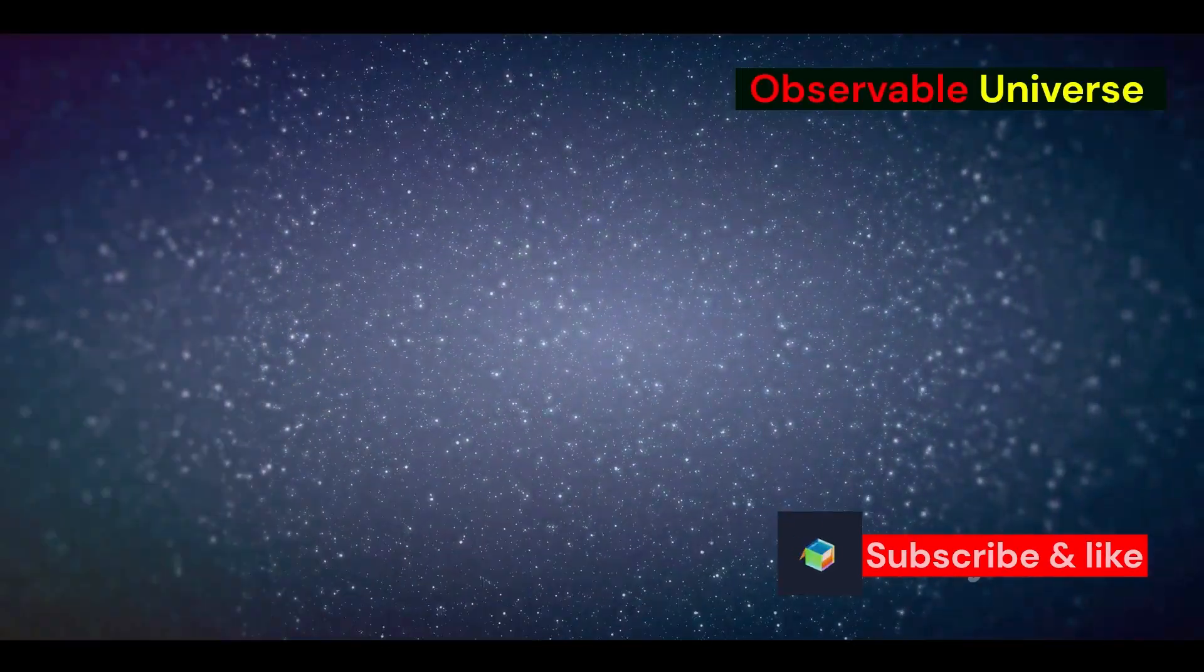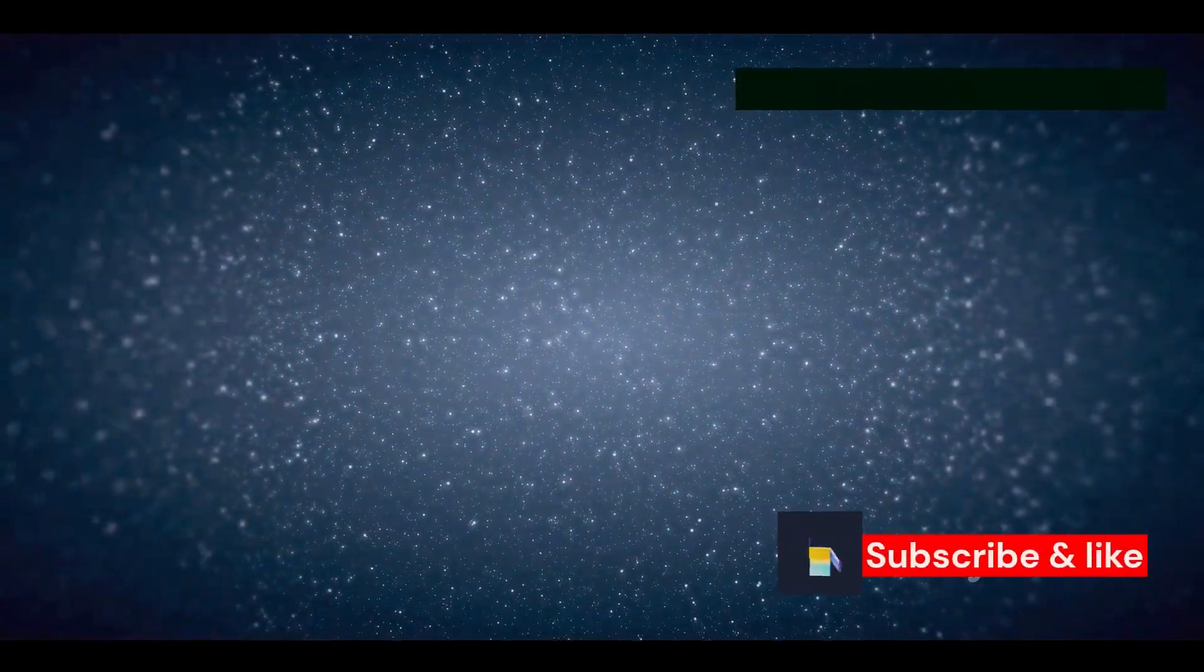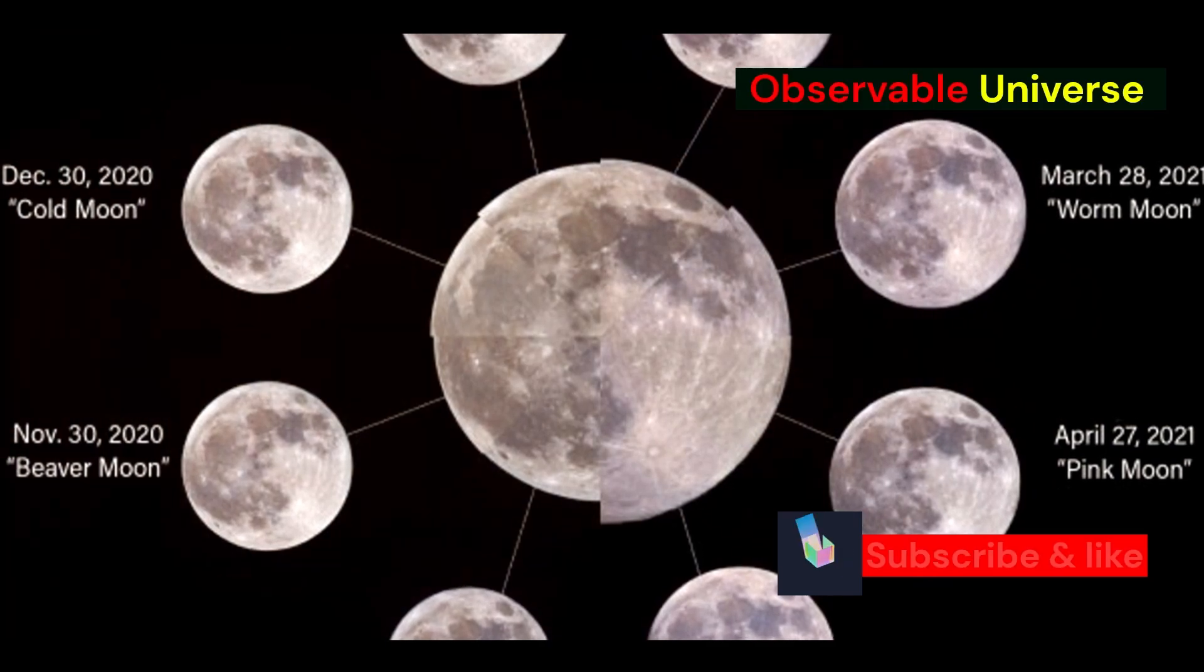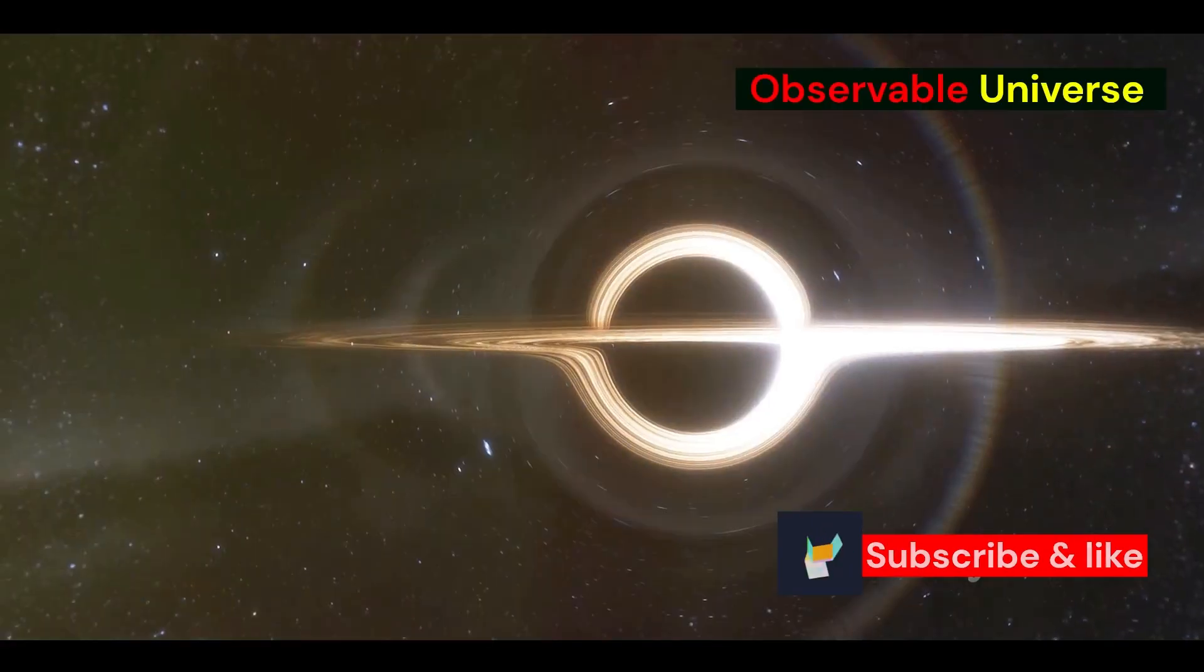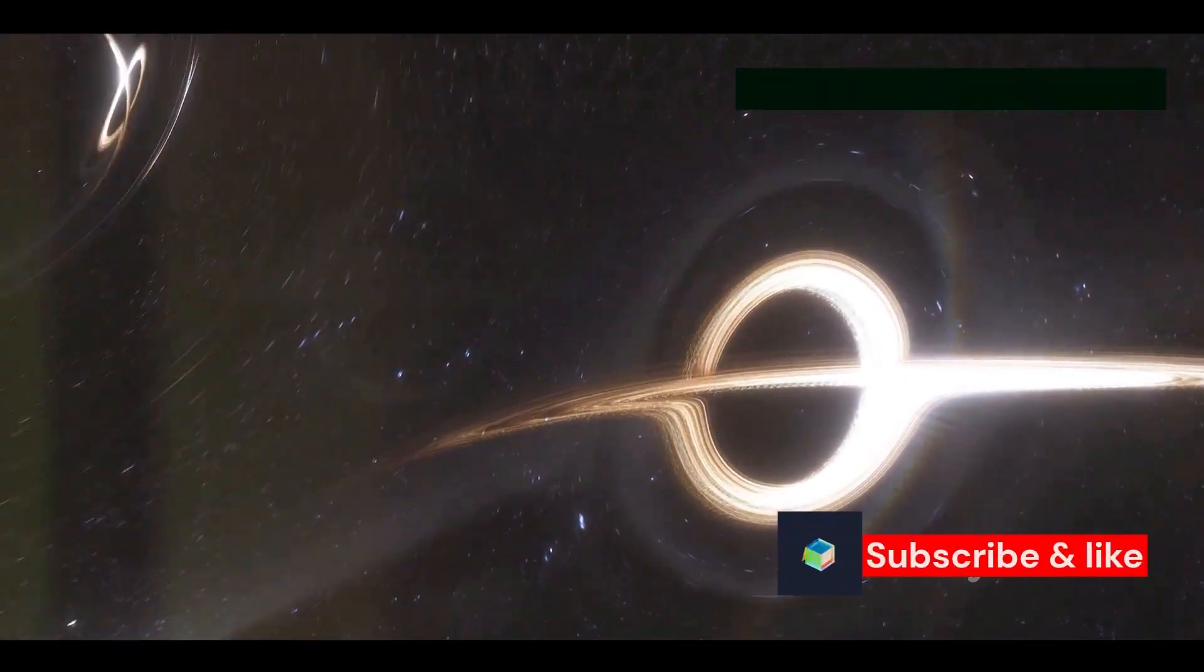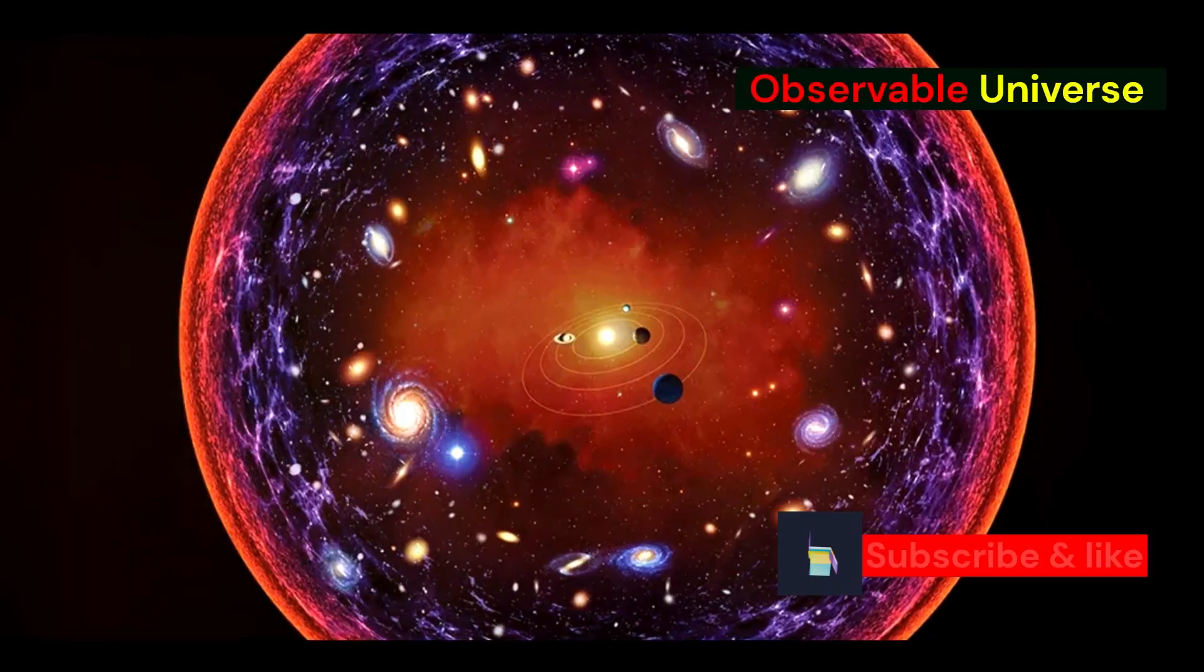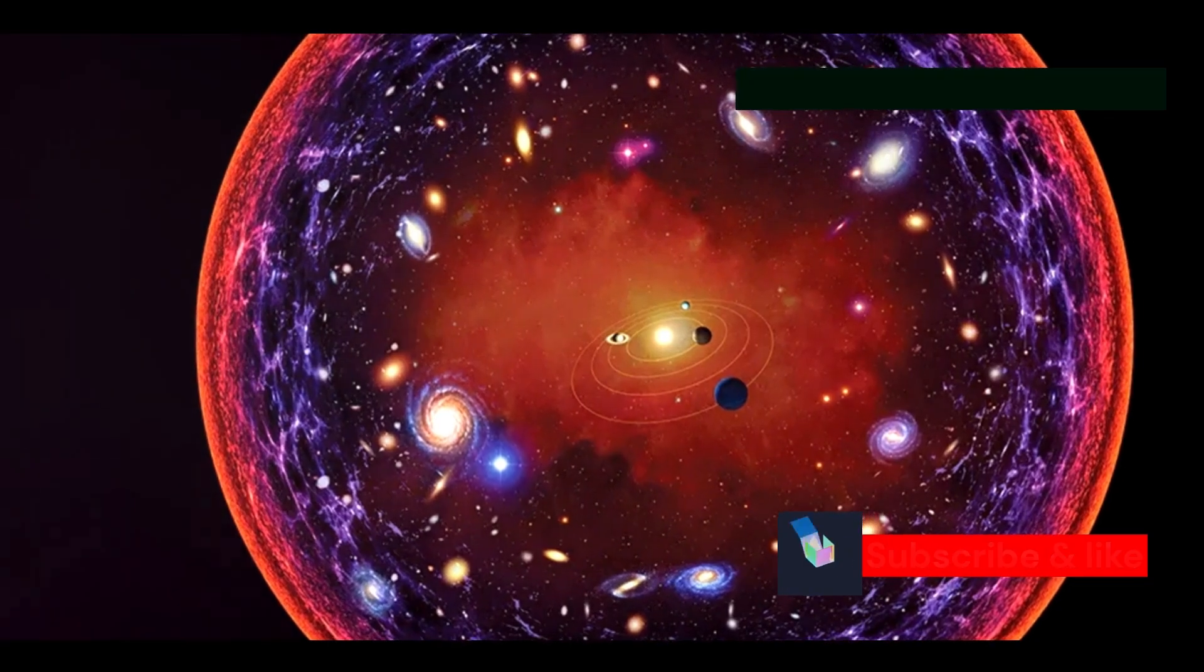The cosmic microwave background radiation suggests that the universe is remarkably flat. Imagine shining a light beam across a flat surface—it will travel in a straight line. In a closed universe, the light would eventually curve back on itself. In an open, saddle-shaped universe, it would diverge.